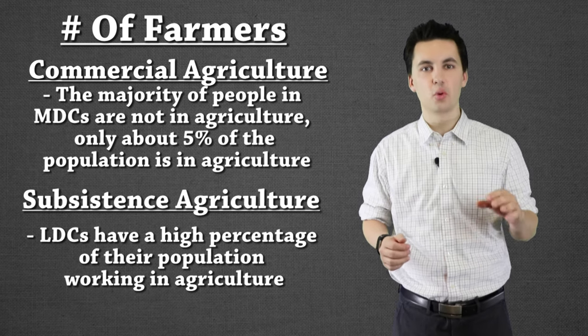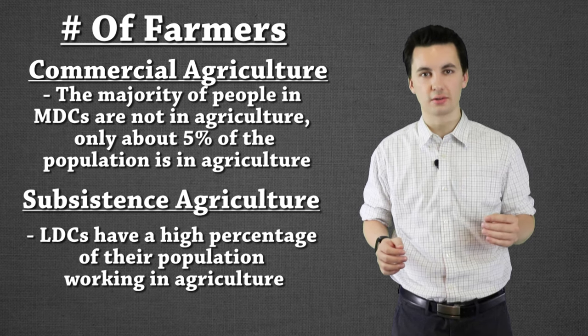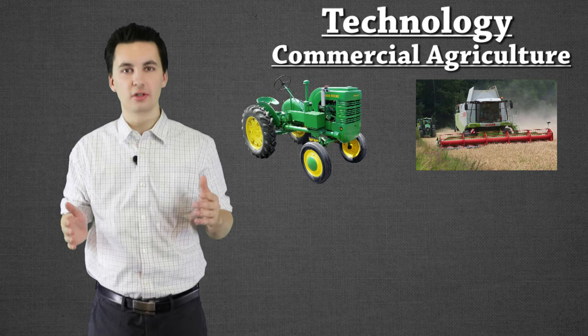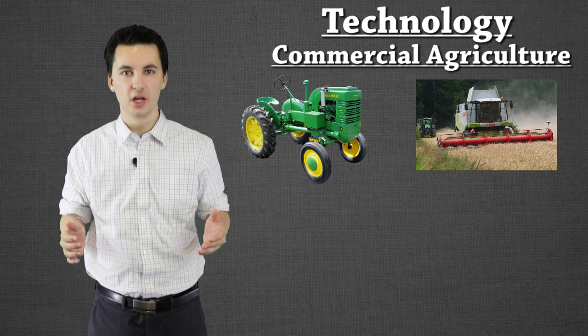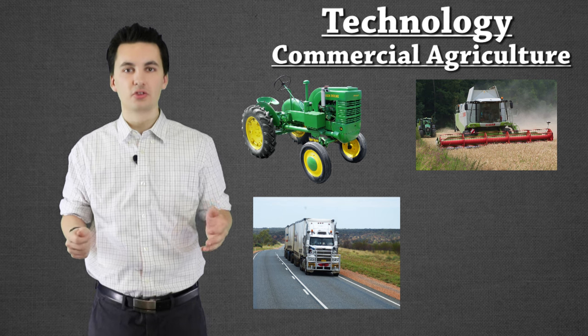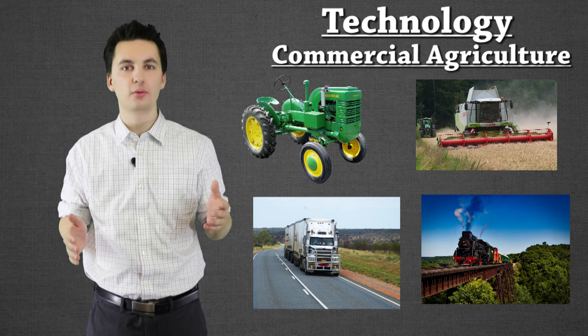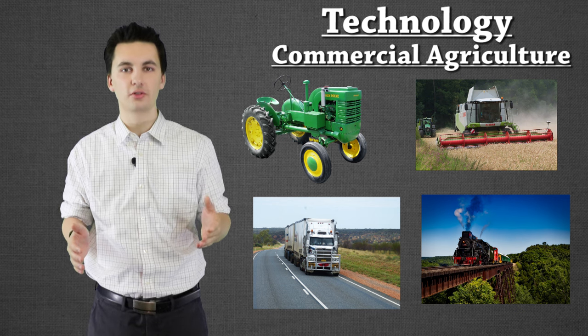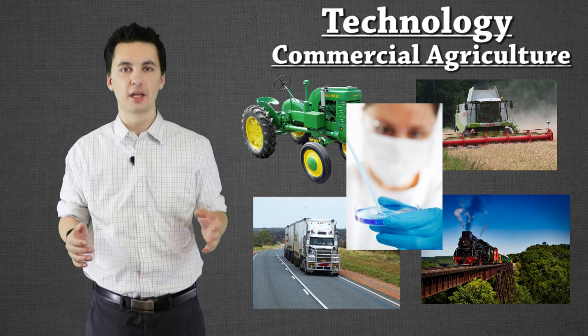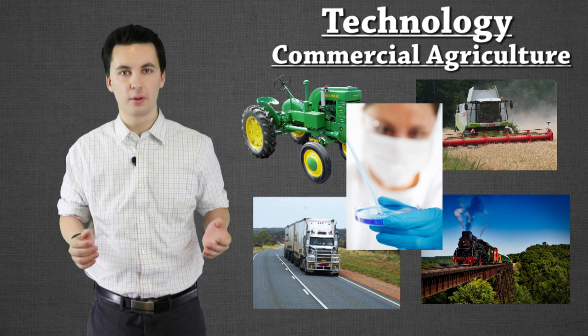Technology is the next big difference between subsistence and commercial agriculture. Commercial agriculture sees a lot more use of machines — tractors and combines — not just for harvesting but also for transportation. Products need to be moved quickly, so advanced roads, trains, boats, and ships are needed to get goods to market. There's also more focus on scientific research to get higher-yielding crops and maximize profits.